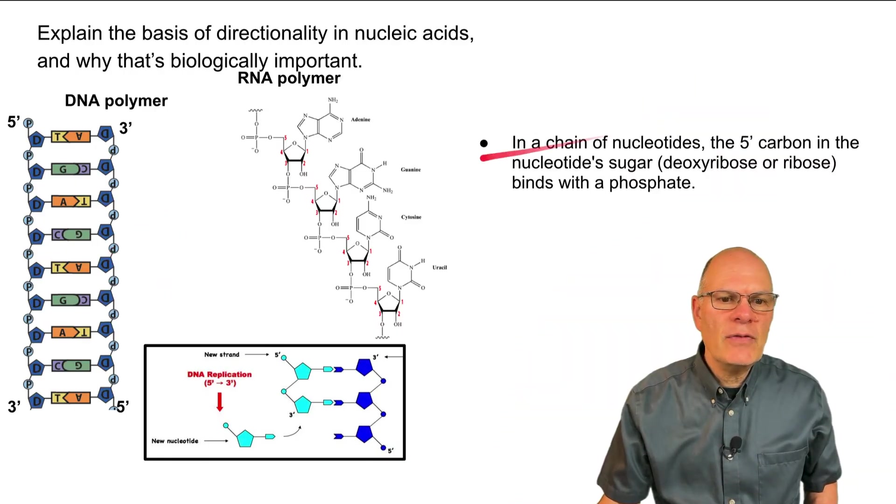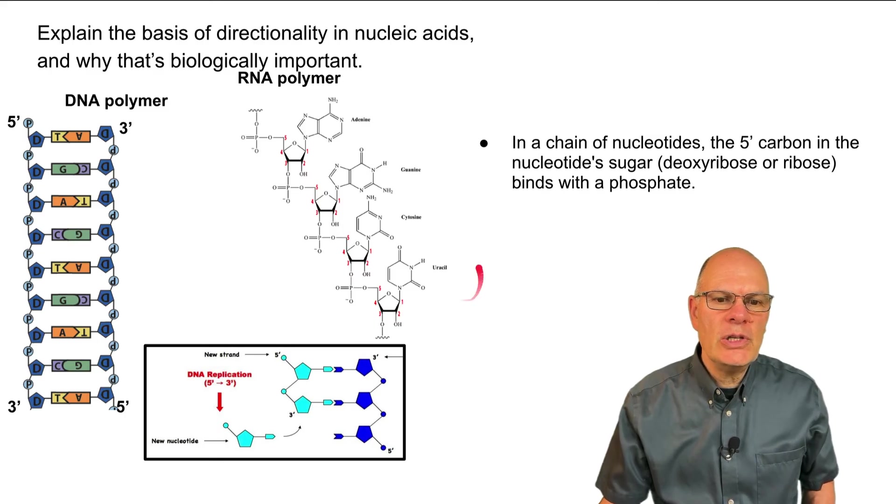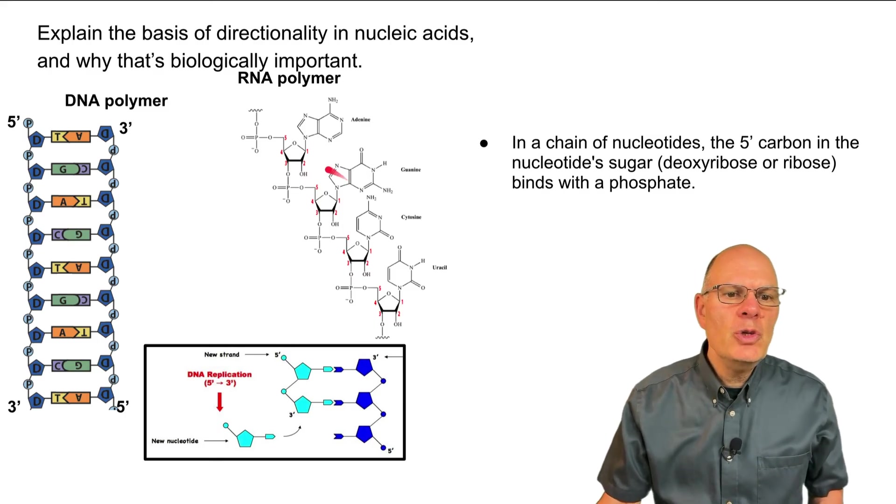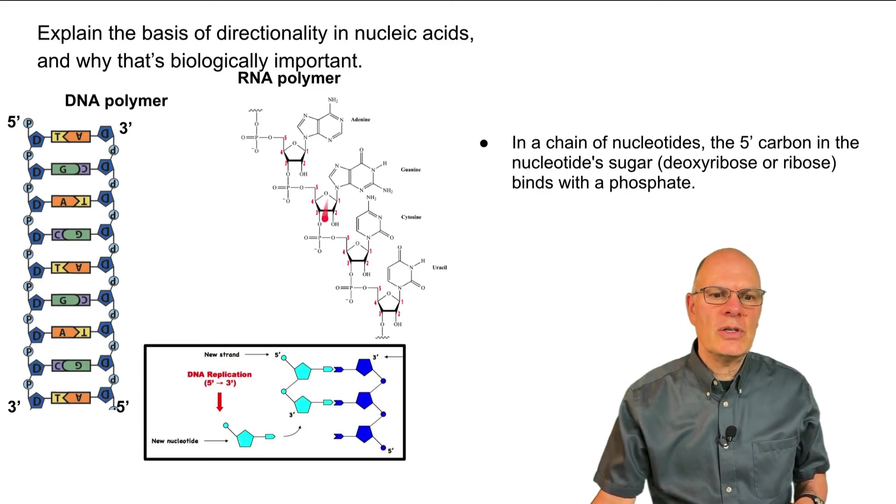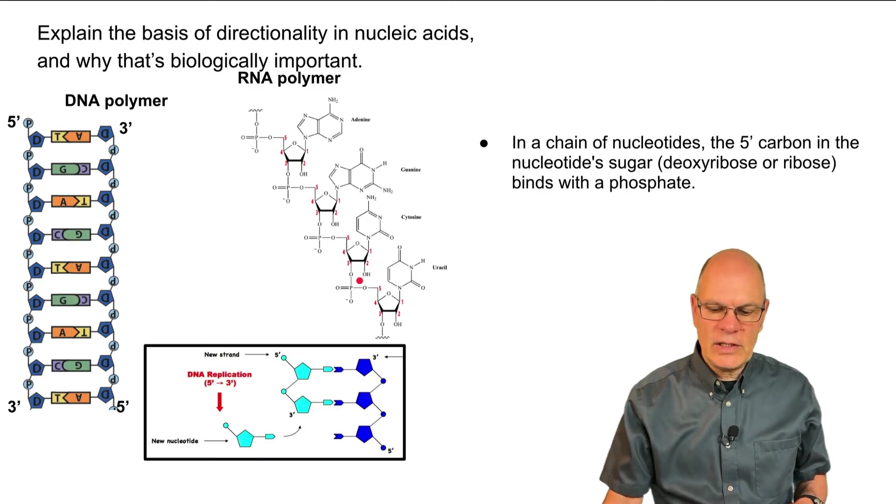Notice that in a chain of nucleotides, these are RNA nucleotides. You can tell because there's uracil. The nucleotide sugar binds with a phosphate. Then there's a sugar, there's a phosphate, there's a sugar, there's a phosphate.